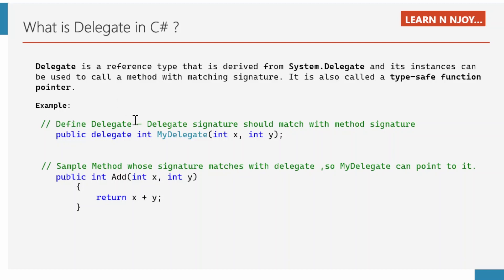Let's define the delegate first. We need to write: public delegate int MyDelegate(int x, int y). If you notice, its signature looks like a method signature. The only difference is that it has the delegate keyword. Let's suppose we have a method called AddMethod that accepts two parameters int x and int y. It performs some operations and returns the output which is of int data type. If you see the AddMethod signature and the MyDelegate signature, both match. So MyDelegate can successfully point to this AddMethod.